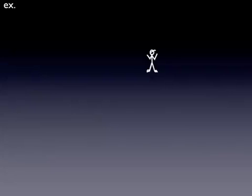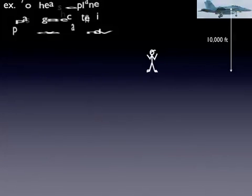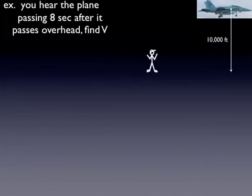So let's do an example. Let's say you are on the ground and you see a jet pass overhead and it's traveling at 10,000 feet. And it's not until 8 seconds after it passes that you finally hear it. So what velocity is that aircraft traveling? Now we can do a few things here just using trigonometry. And let's assume the temperature of the atmosphere is 40 degrees Fahrenheit.